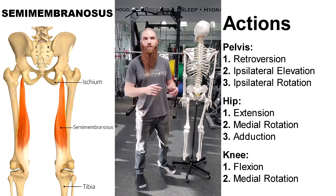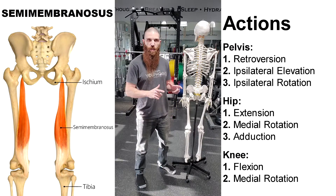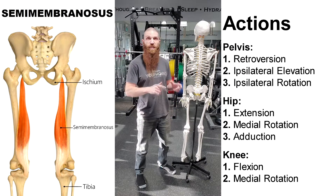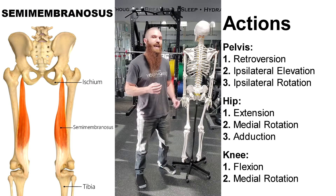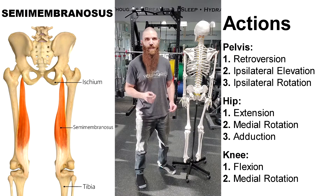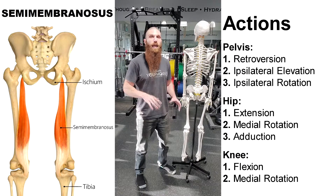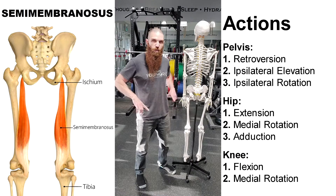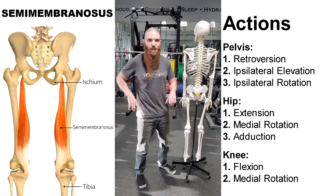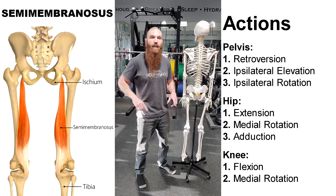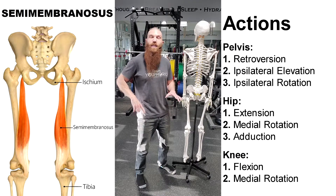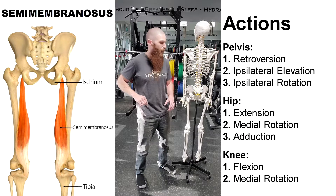At the pelvis, its main action is going to be retroversion of the pelvis, or posteriorly tilting the pelvis. It's also going to have a component of ipsilateral rotation — rotation to the same side — and ipsilateral elevation — elevation to the same side.